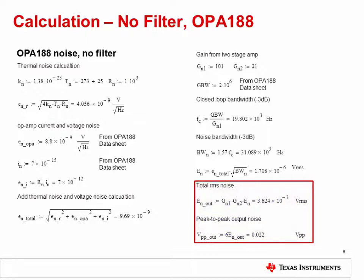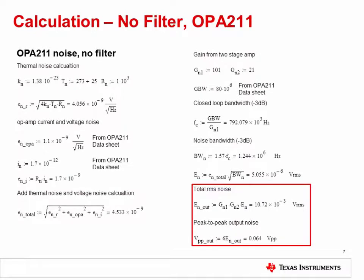This slide shows the complete calculation for the OPA188, and this slide shows the calculation for the OPA211. The op amp's input voltage and current spectral density, as well as the op amp gain bandwidth product, are different, but the steps of the calculation are exactly the same. Simply substitute in the new values and take note of the result.